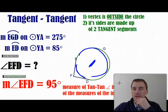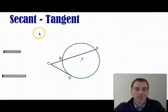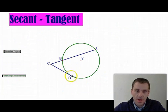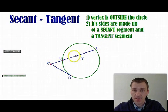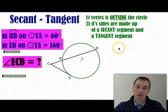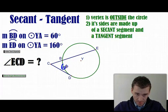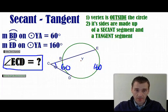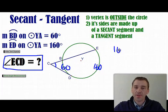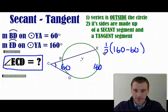I wonder what happens with the secant-tangent angle, where again the vertex is outside the circle. The secant-tangent angle looks like this: the vertex is outside the circle, and its sides are a secant segment EC and a tangent segment CD. Let's say the small intercepted arc is 60 degrees and the other intercepted arc is 160 degrees. You guessed it — you take half the difference of the intercepted arcs: 160 minus 60 equals 100, and half of 100 is 50.